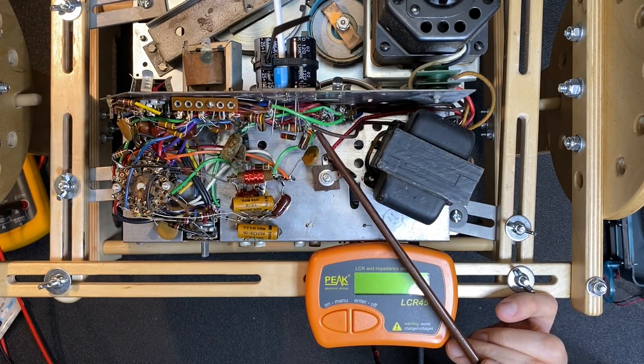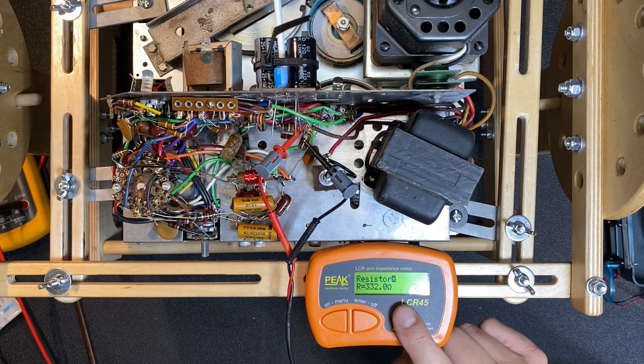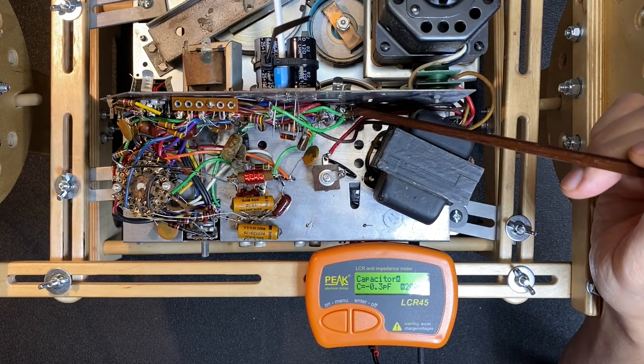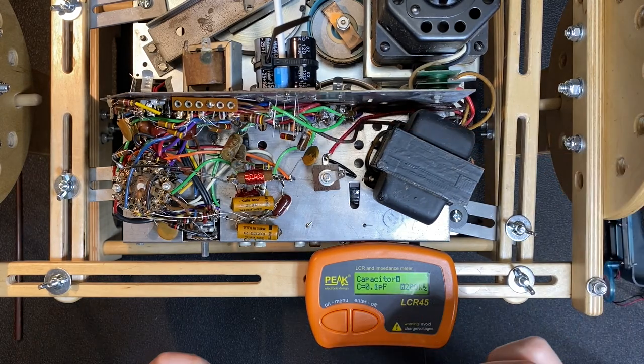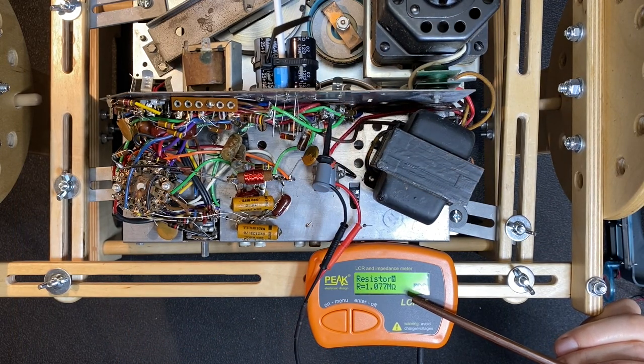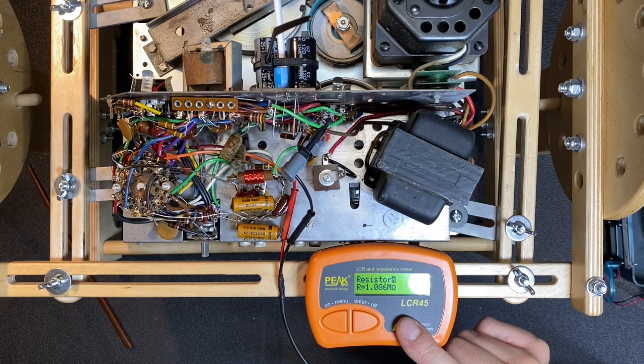We have an orange-orange-brown resistor here. That should measure 330 ohms, and it's just about dead-on at 332. There are two brown-black-green resistors here, which should measure 1 megaohm each. Excellent. 1.078 megaohms. And this one's about the same at 1.086 megaohms. Perfect.